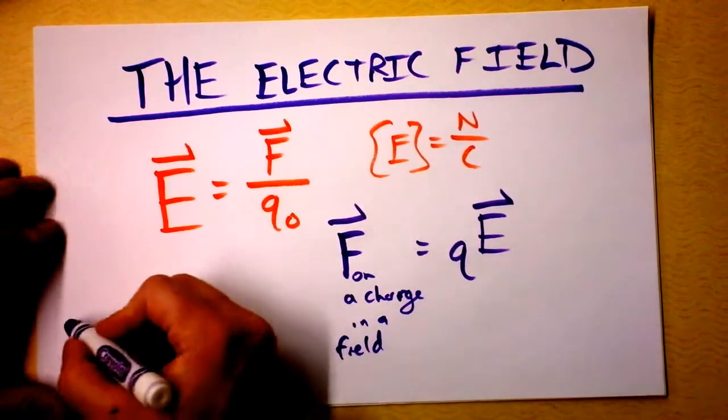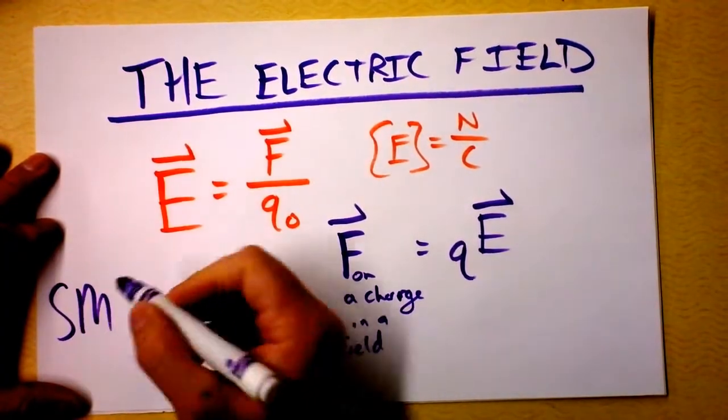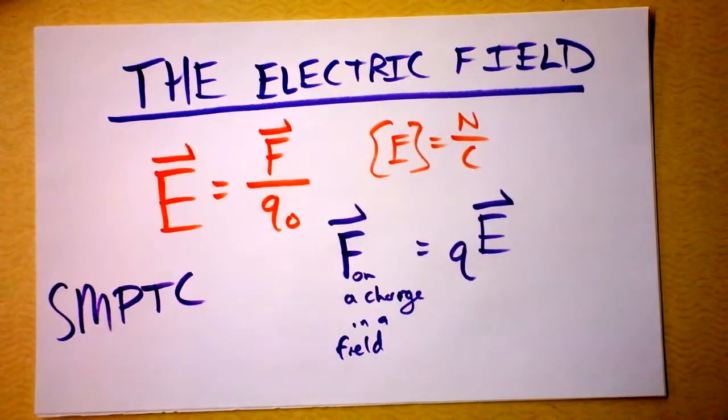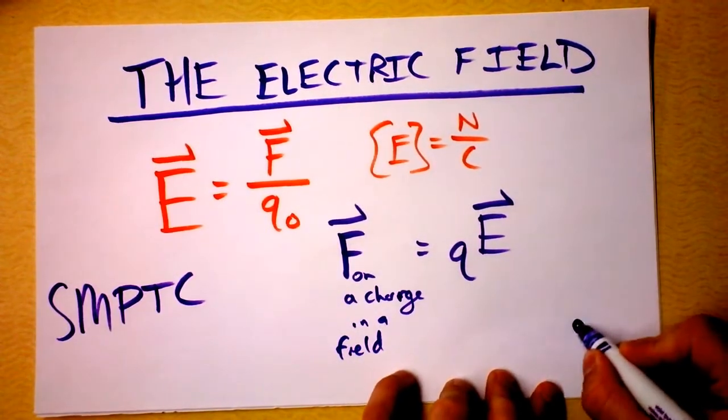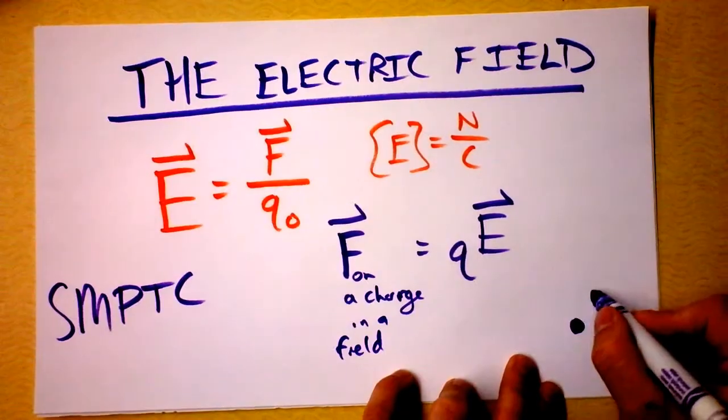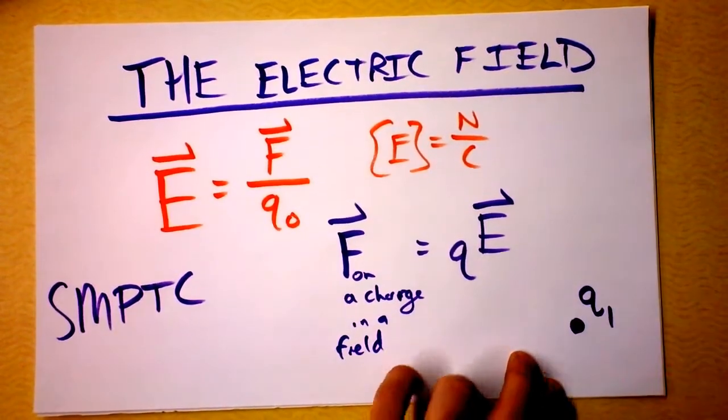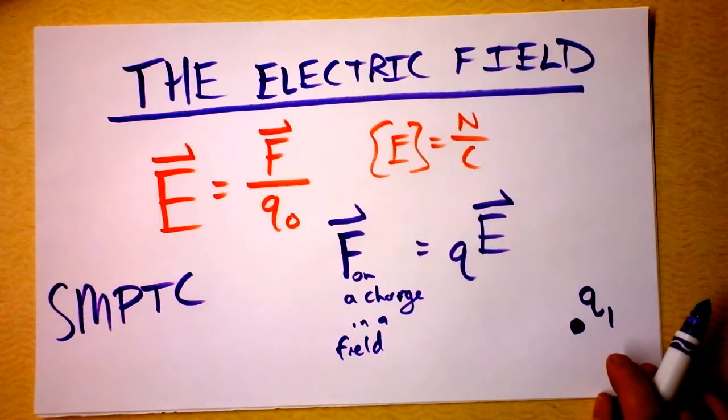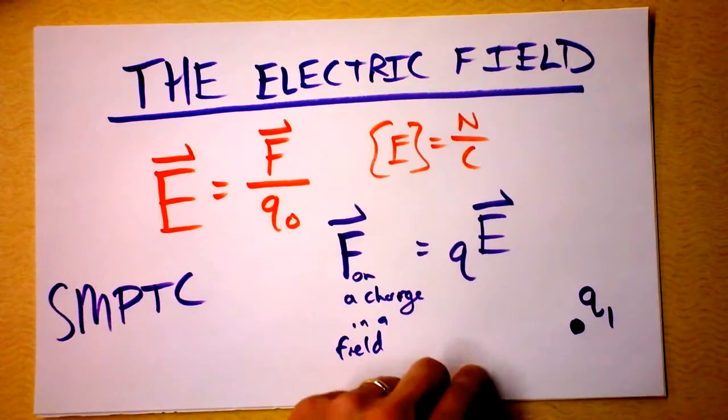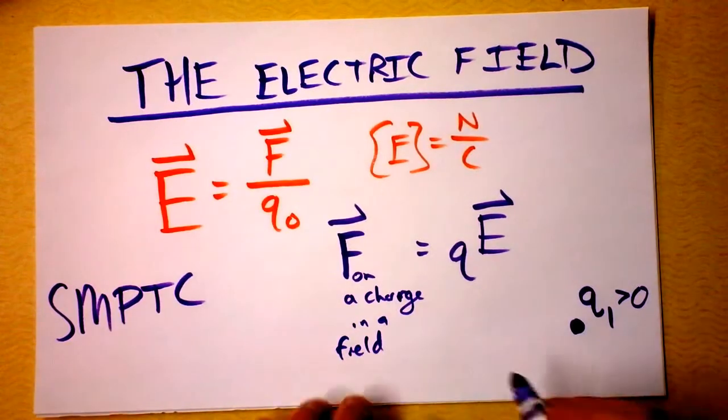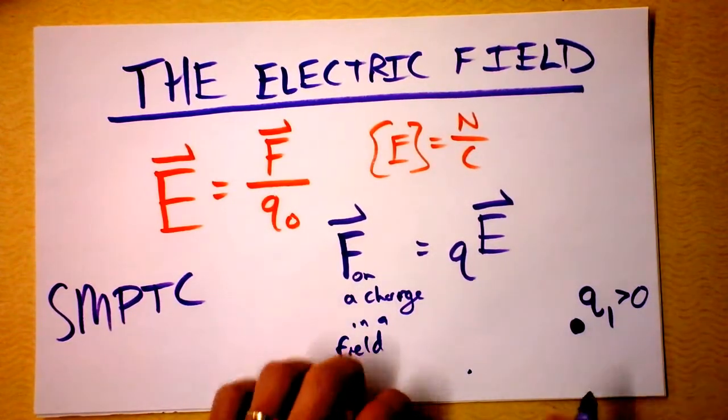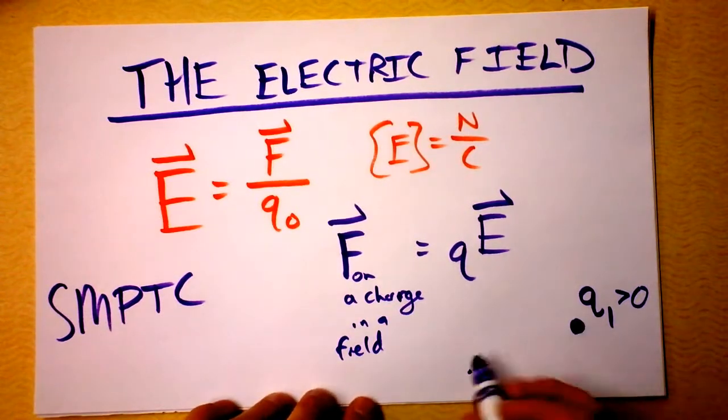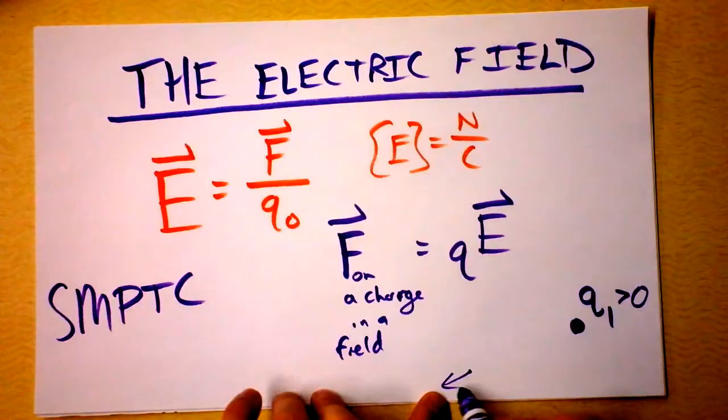And I like to define, in my classes, I like to define something called a SMAPTAC, which is a small positive test charge. And you can take that test charge somewhere. Let's say I've got this charge over here. This is a big old charge. I'm going to call it q1. I've got q1 right there, and I'm going to take a SMAPTAC out of my pocket. Here, I've got one right here. And I'm going to set down the SMAPTAC right there. If q1 is a positive charge, my small positive test charge will feel a force because of the presence of q1. And the small positive test charge will feel a medium force right here, that direction.